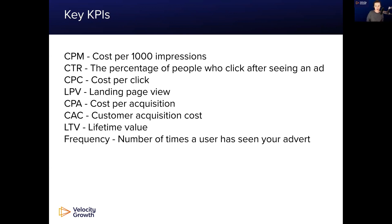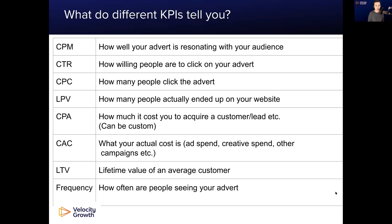Frequency is the number of times a user has seen your advert — important because frequency and ad blindness go hand in hand. Now let's talk about these KPIs in a bit more detail. CPM, or cost per thousand impressions, is how cheaply you can get in front of 1,000 people on the Facebook and Instagram ecosystem. Whenever I refer to Facebook, I'm also incorporating Instagram and anything within that ecosystem umbrella.